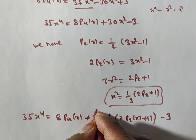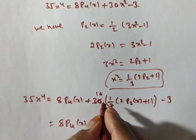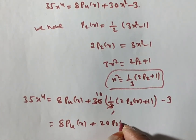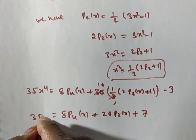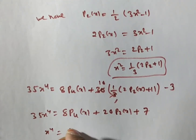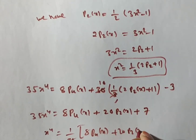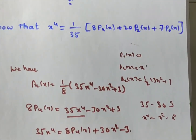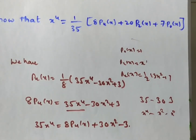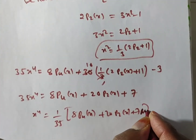Simplifying: 30 times (1/3) gives 10, so we get 8P₄(x) + 10·(2P₂(x)) + 10 - 3 = 8P₄(x) + 20P₂(x) + 7. Therefore x⁴ = (1/35)(8P₄(x) + 20P₂(x) + 7). Since P₀(x) = 1, the constant 7 can be written as 7P₀(x), giving x⁴ = (1/35)(8P₄(x) + 20P₂(x) + 7P₀(x)). Hence proved.